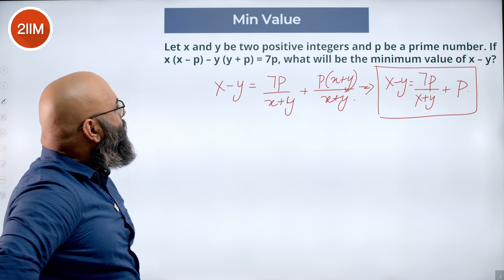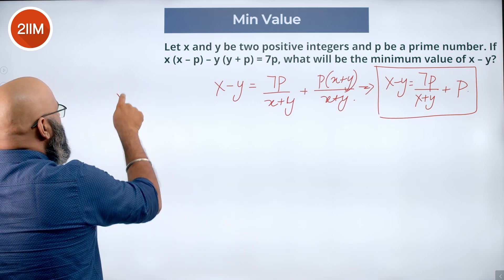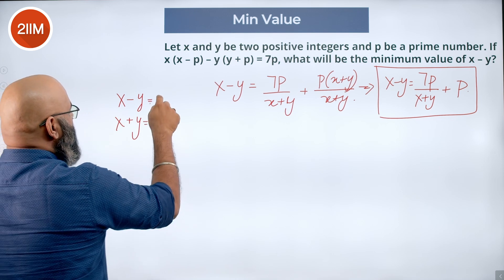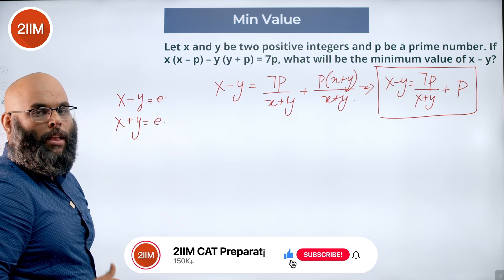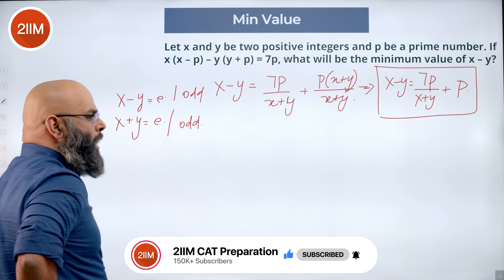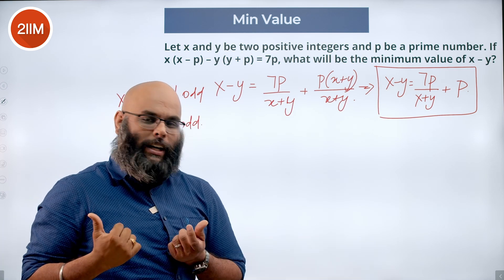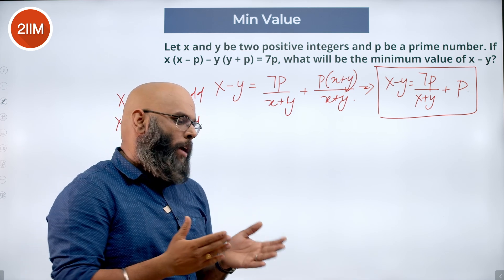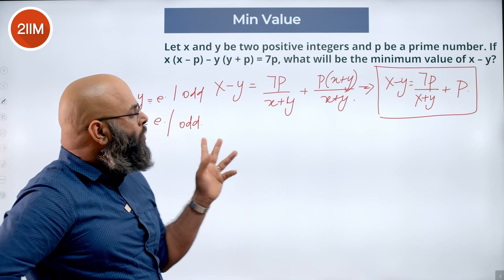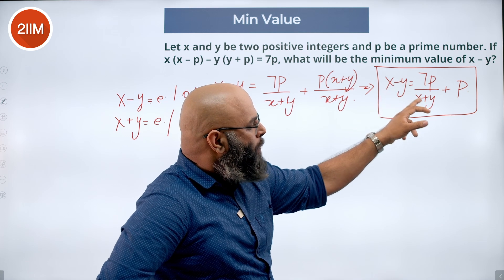We know that x and y are two positive integers. Now x minus y and x plus y always match in parity. For instance, if x minus y is even, x plus y is also even. Similarly, if x minus y is odd, x plus y is also odd. For example, 2 plus 4 is 6, and 2 minus 4 is minus 2 — they are always even. So odd plus odd is even, even plus even is even.